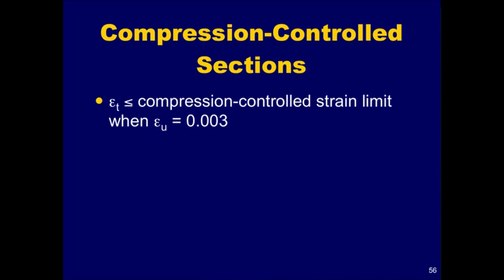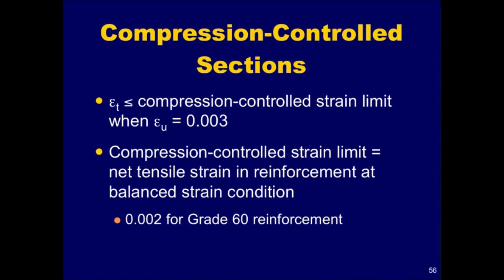According to section 10.3.3, a section is compression-controlled if the net tensile strain in the extreme tension steel, epsilon sub T, is less than or equal to the compression-controlled strain limit when the concrete in compression reaches its assumed strain limit, epsilon sub U of 0.003. The compression-controlled strain limit is the net tensile strain in the reinforcement at balanced strain conditions. It is permitted to set the compression-controlled limit equal to 0.002 for grade 60 reinforcement, and this is also permitted for pre-stressed reinforcement. Note that when other grades of reinforcement are used, the compression-controlled strain limit is not equal to 0.002.